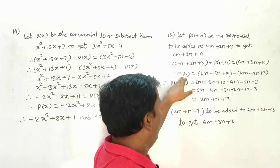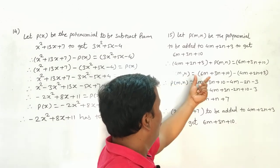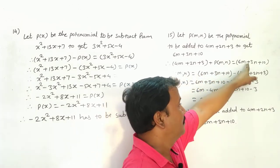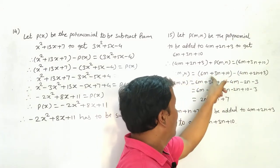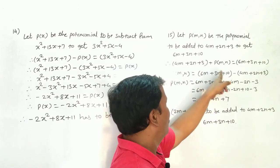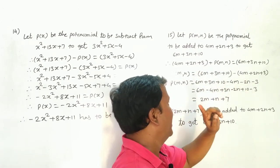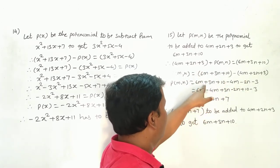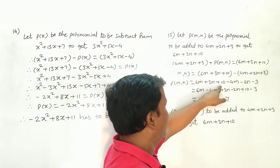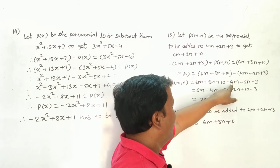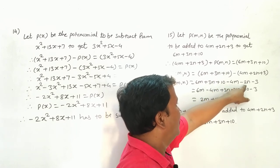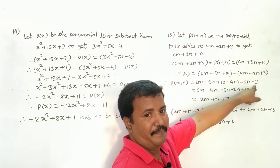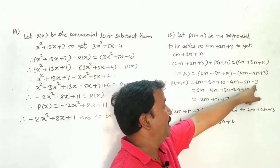Therefore, p(m) is equal to 6m² + 3m + 10 minus (4m² + 2m + 3). Open the bracket: 6m² + 3m + 10 minus 4m² minus 2m minus 3.